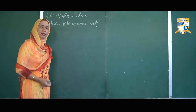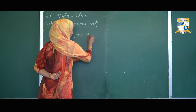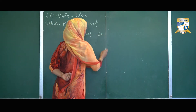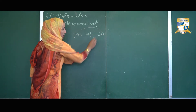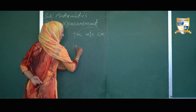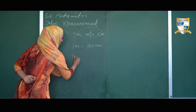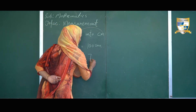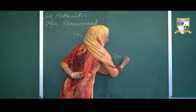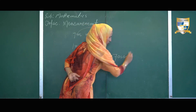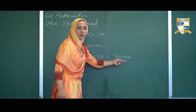Now let us go for the conversion of meters into centimeters. I will take an example: convert 7 meters into centimeters. As we know, 1 meter consists of 100 centimeters. So 7 meters equals 7 multiplied by 100, that is equal to 700 centimeters. Here we have converted meters into centimeters: 7 meters are equal to 700 centimeters.